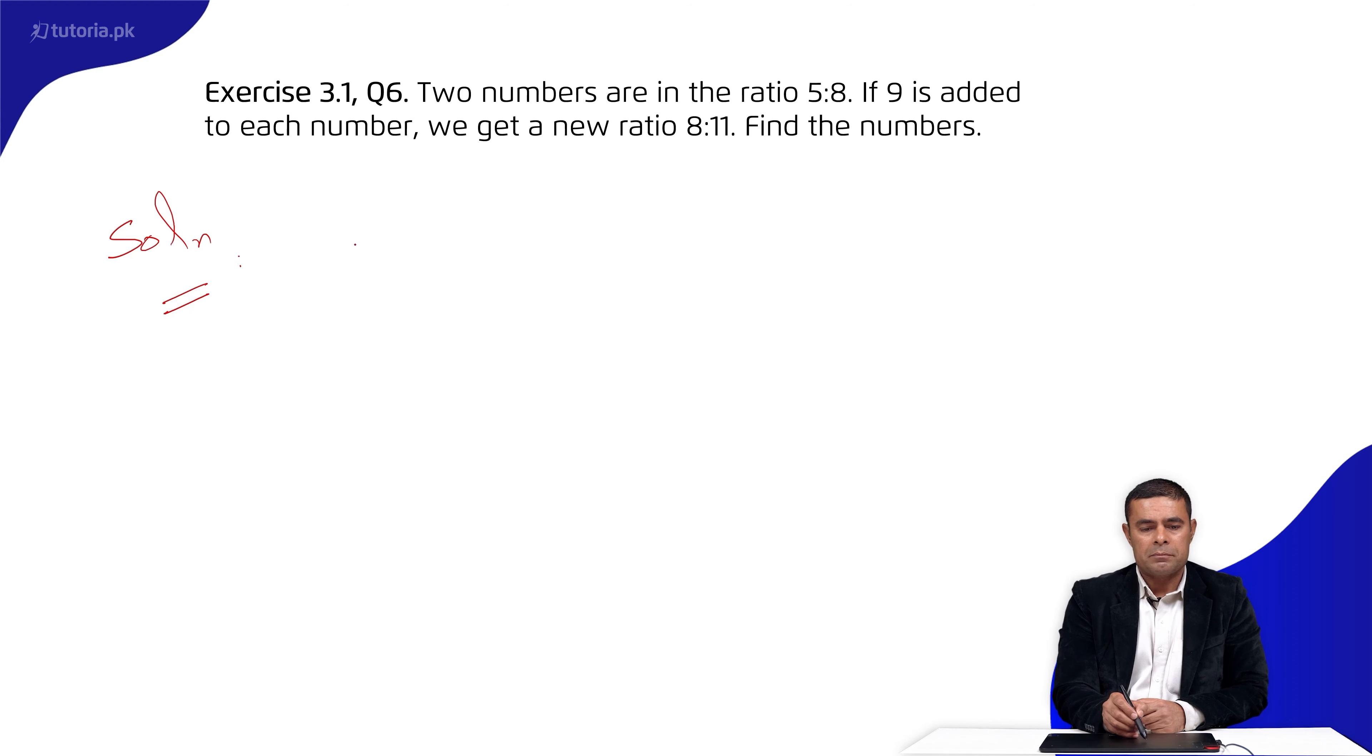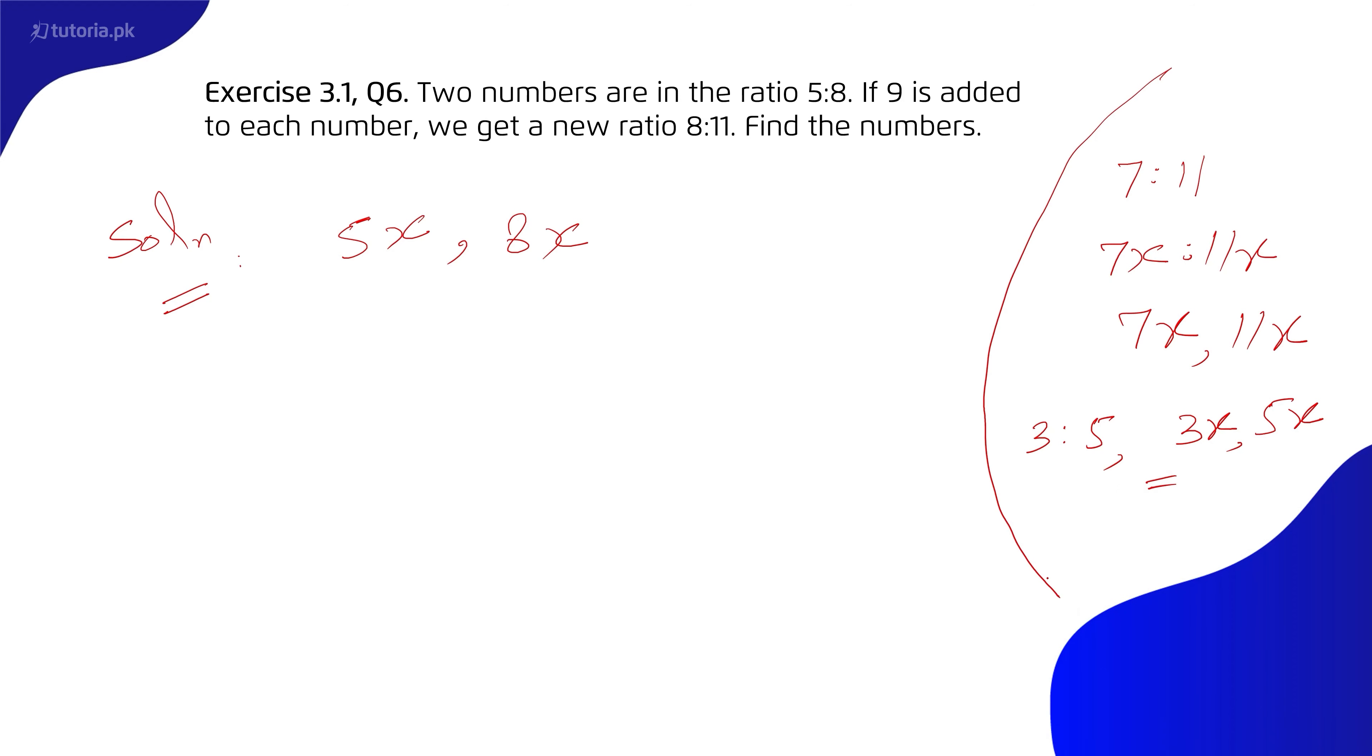Let's suppose the first number is 5x and the second number is 8x, since they're in ratio 5:8. For example, if the ratio were 7:11, the numbers would be 7x and 11x. If the ratio is 3:5, the numbers would be 3x and 5x, and so on.